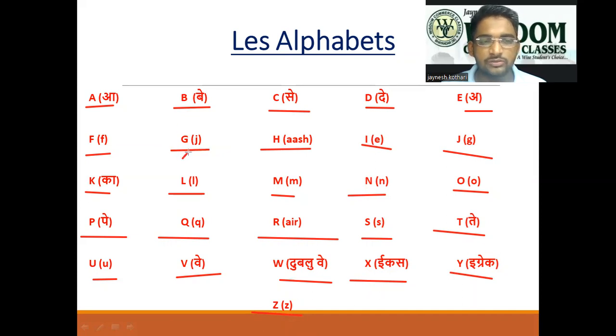is pronounced as G, G is pronounced as J, and J is pronounced as G. E is pronounced as A, and R is pronounced as air. H, if you see over here, this is ash. So let's start again right from the beginning: A, B, C, D, E, F, G, H, I, J, K, L, M